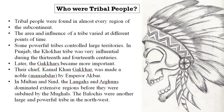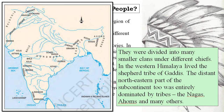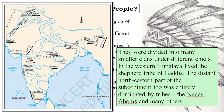Tribal people were found in almost every region of the subcontinent. As you can see on the map, these are all tribes found in different parts of India: Gonds, Baigas, Khonds, Koyas, Bheel tribe, Jaitwa tribe, Kholi tribe, Khasis, Kuch, Ahom tribe, Naga tribe, and Vita tribe — different types of tribes spread across India.